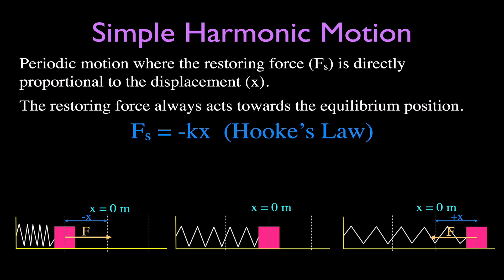We can use this equation: the force on the spring equals minus K, the spring constant, times X, the displacement. This equation is known as Hooke's Law. We can use it to calculate force, spring constant, or displacement. The minus sign simply means the force acts in the opposite direction of the displacement — if you apply a force in one direction, the spring pulls back in the other direction, per Newton's third law of motion, equal and opposite reactions.